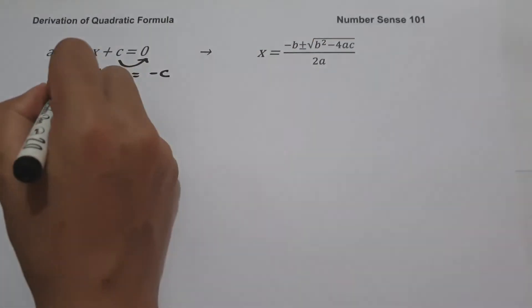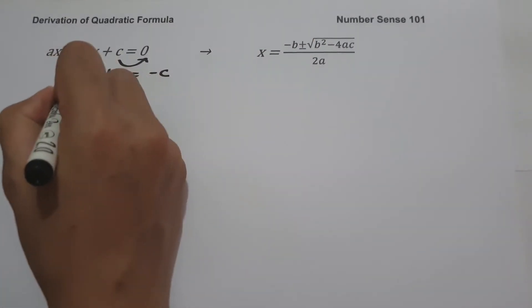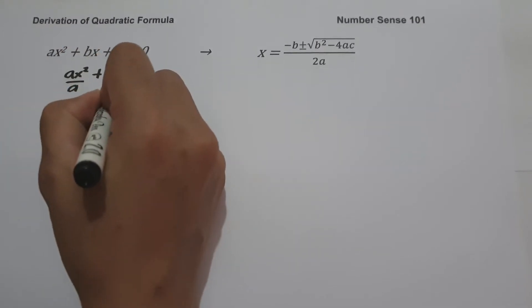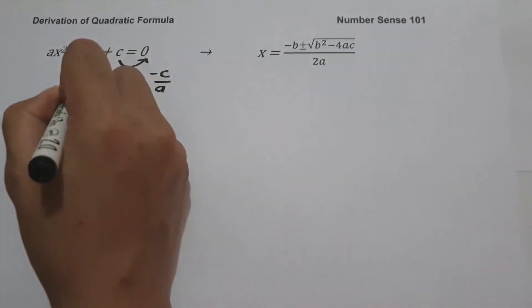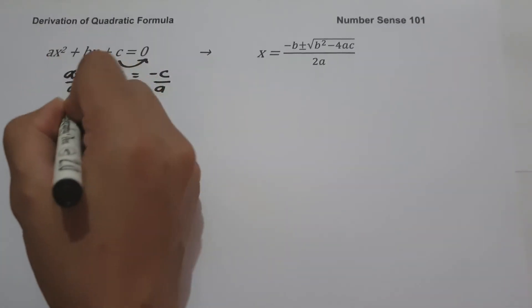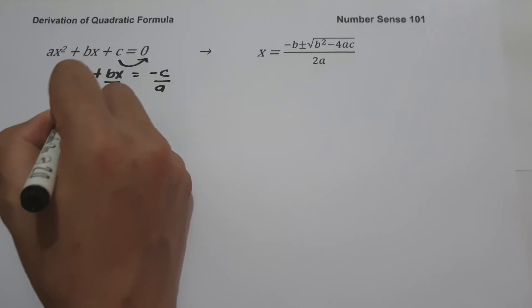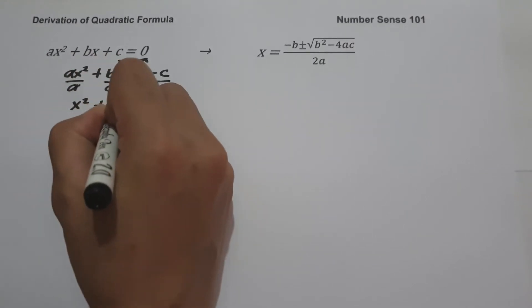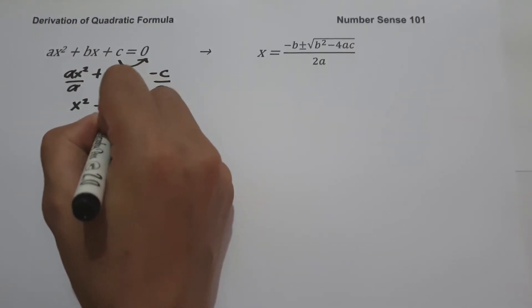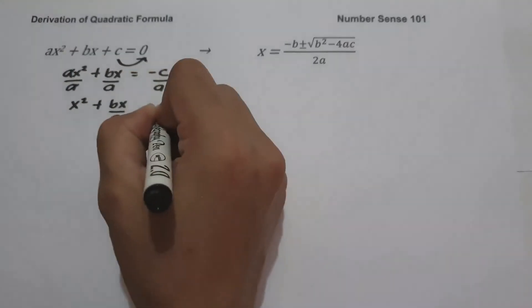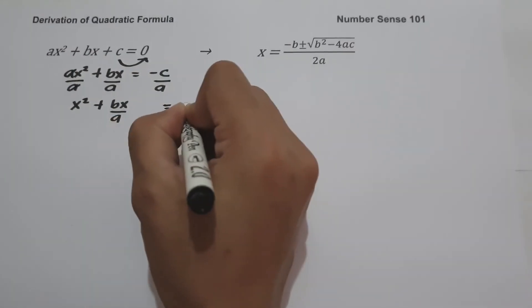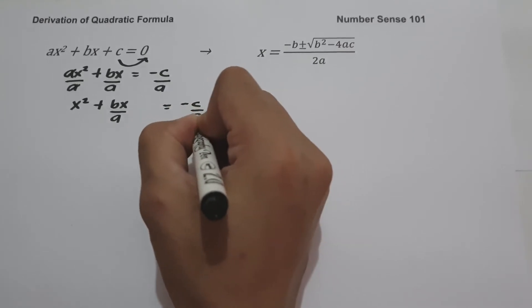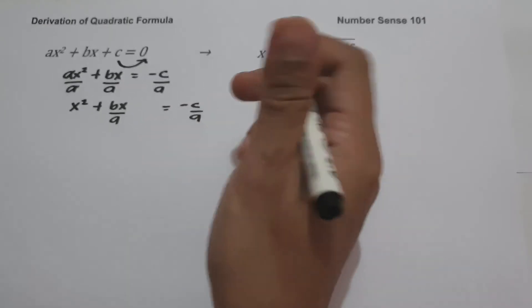Next, let us divide the whole equation by a. Cancelling a on the left side gives us x² + (b/a)x = −c/a.